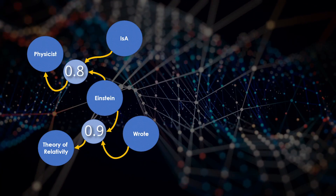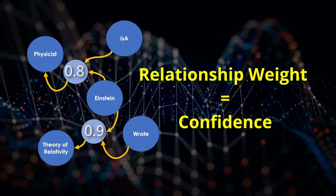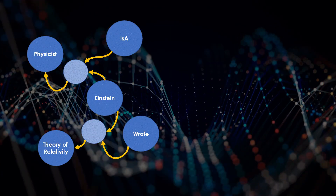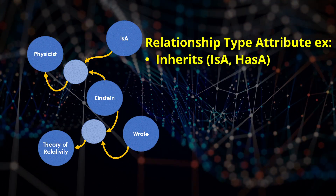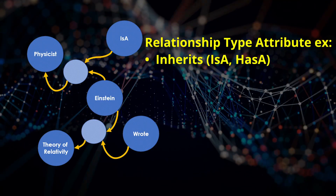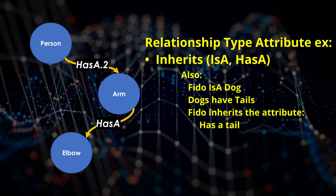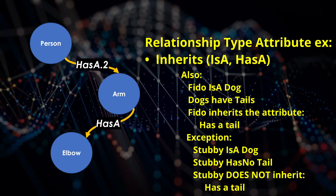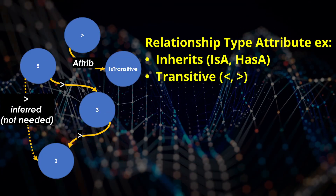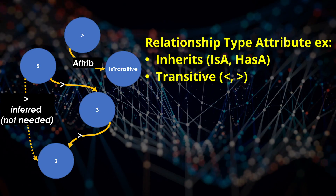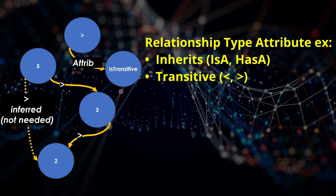Relationships also have weights, representing the confidence that a relationship is true. When working with limited or erroneous data, this allows for choosing the most likely answers. Because they are nodes, relationship types can have attributes which enable powerful inferences. Is-a and has-a relationships allow inheritance — for example, a person has two arms, an arm has an elbow, therefore a person has two elbows. Exceptions make this a powerful data compression technique; an individual node only needs information which makes it unique, and most information is inherited. 'Greater than' is an example of a relationship type with a transitive attribute — 5 is greater than 3, 3 is greater than 2, which implies that 5 is also greater than 2.